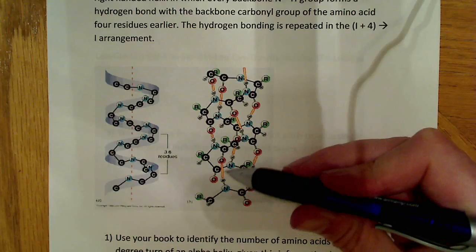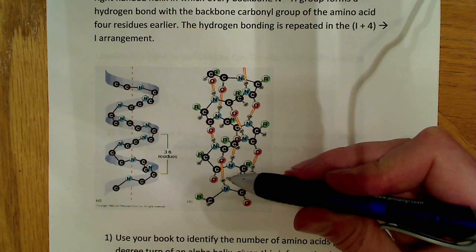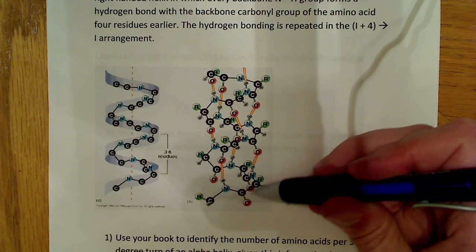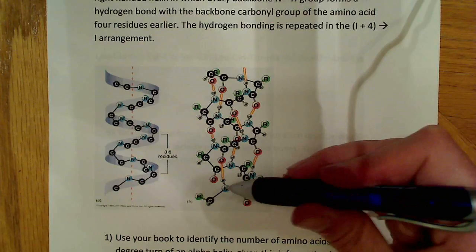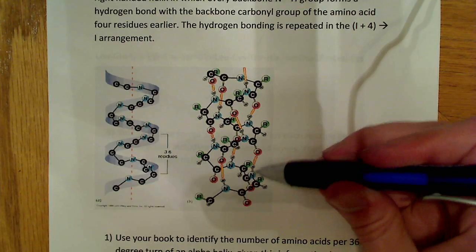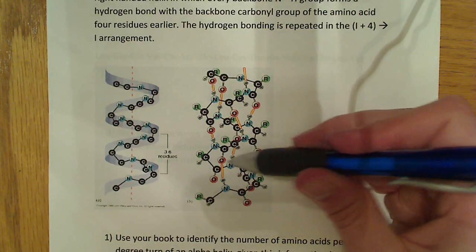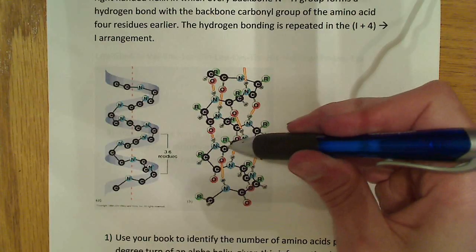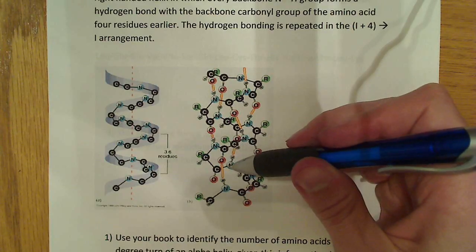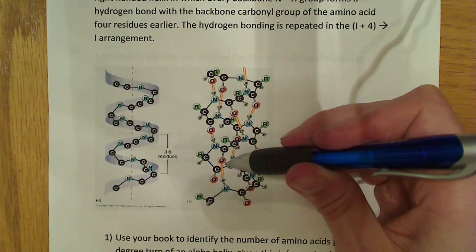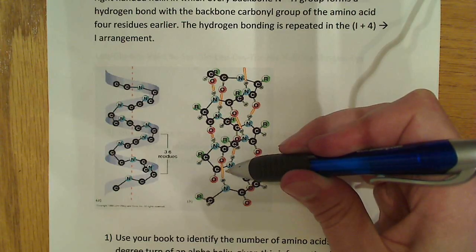Now, this hydrogen bond should be formed with the fourth residue. So, we'll say, okay, one residue, two residues, three residues, four residues, and sure enough, on the fourth residue, if you look at this close enough, I'm sure you'll be able to convince yourself of this, but on the fourth residue, there's a hydrogen bond here.